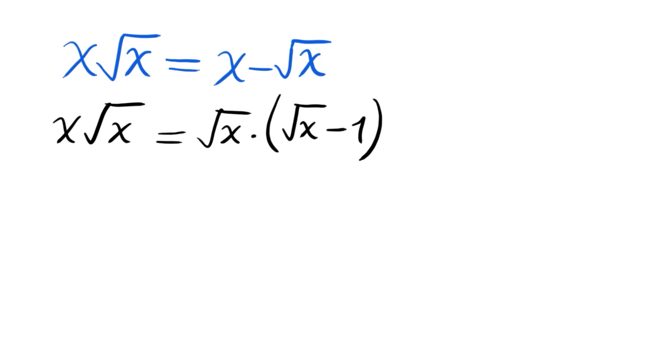We can cancel this √x, but before we do, we'll find the root of that factor. When √x = 0, x = 0 satisfies our original equation. So this is the first root we have found.